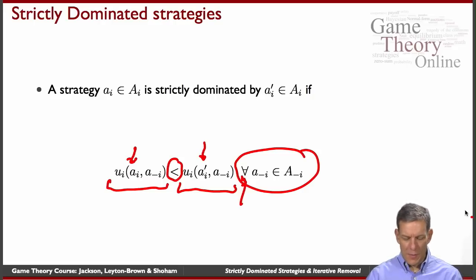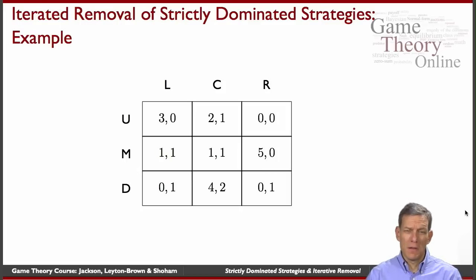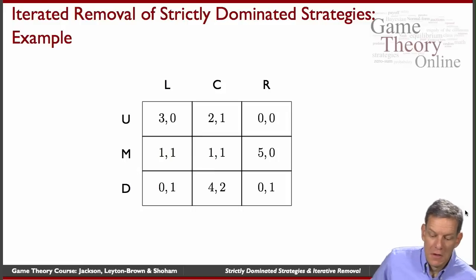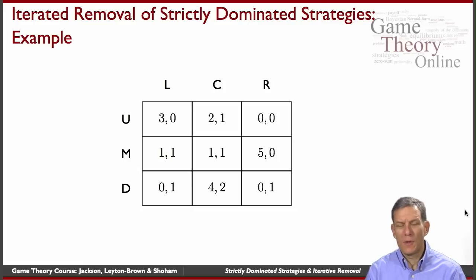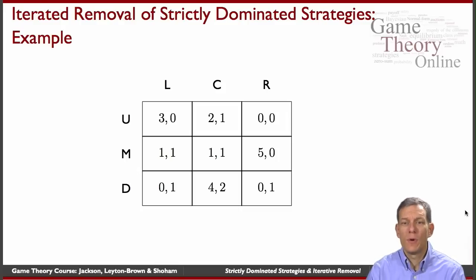That's the concept of strict domination. So let's have an idea now of iterated removal of strictly dominated strategies. Here's a three-by-three game with a bunch of different payoffs. Let's suppose you want to find the Nash equilibrium of this game — it gets a little complicated because you have to consider all possible combinations if you're thinking about mixed or pure strategies. One thing we can begin to do is look for strictly dominated strategies and just get rid of those.